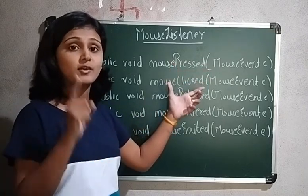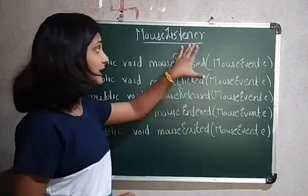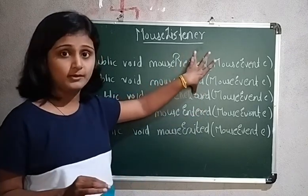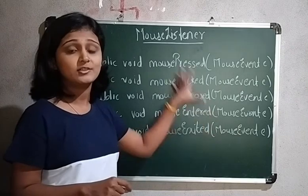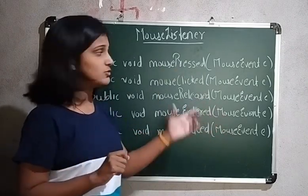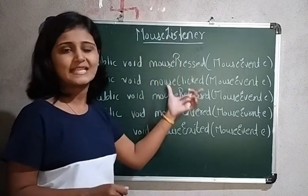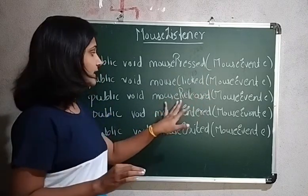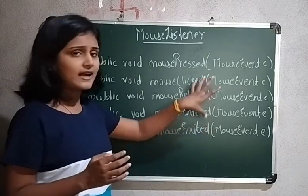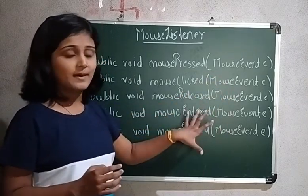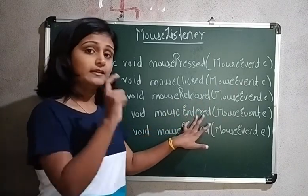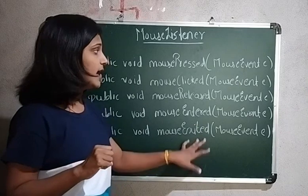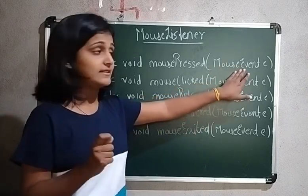Just like with KeyListener, if you want to use only one or two methods, you still have to override all five methods, even if some have an empty body. The five methods are: mousePressed — when the mouse button is pressed; mouseClicked — when the mouse is clicked; mouseReleased — when the mouse is released; mouseEntered — when the mouse arrow enters the component; and mouseExited — when the mouse arrow leaves the component.